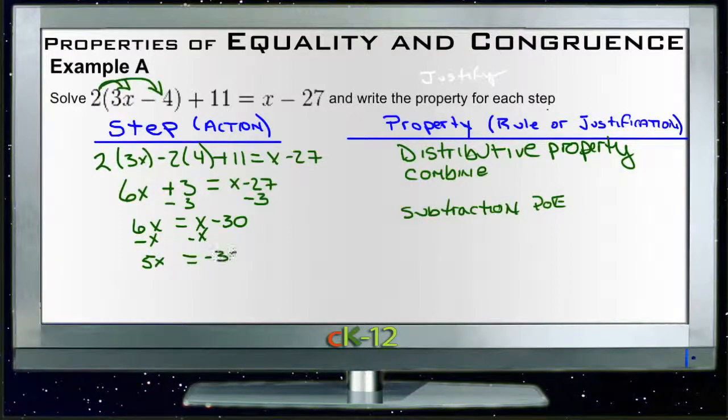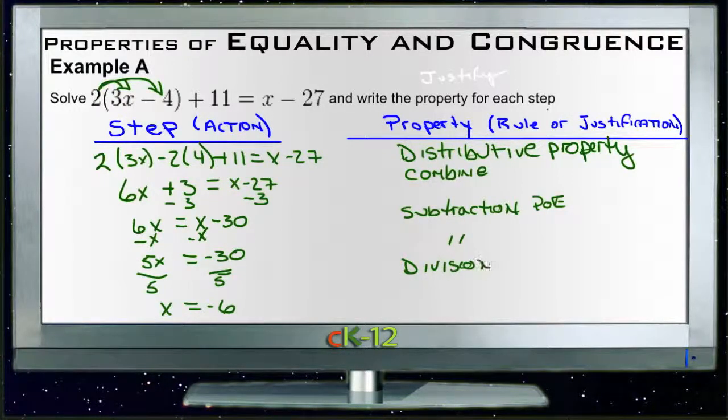Equals negative 30, and that was the subtraction property of equality. And then we divide both sides by 5, and then we get x = -6, and divide both sides by 5 is, of course, the division property of equality.